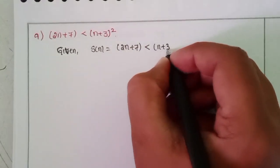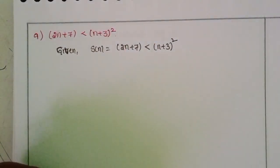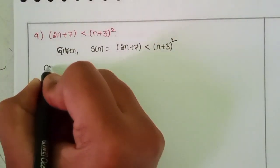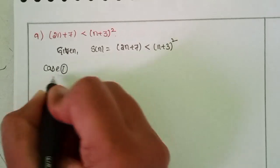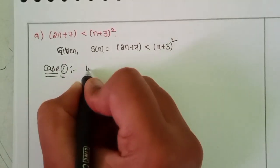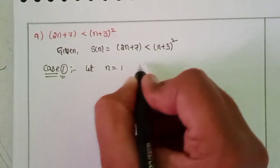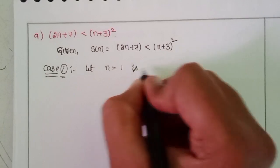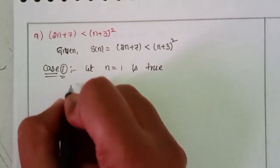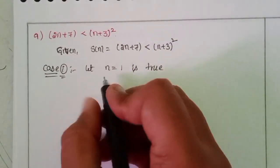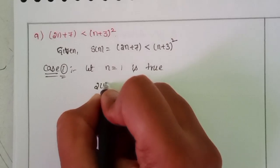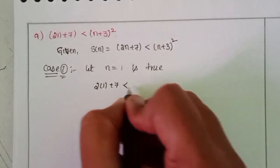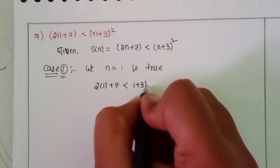This is a different problem. Case 1: Let n equal to 1 is true. So I will write directly 2 into 1 plus 7 is less than 1 plus 3 whole square.